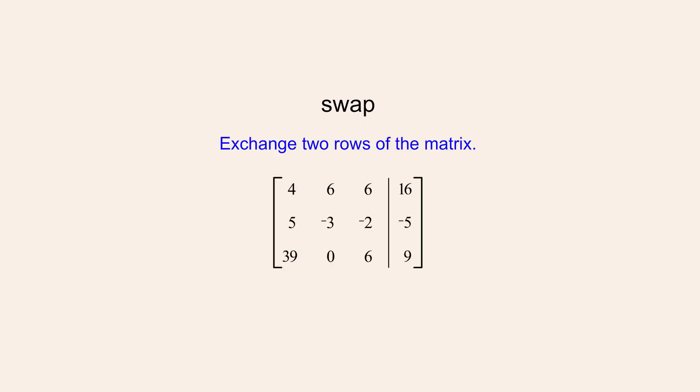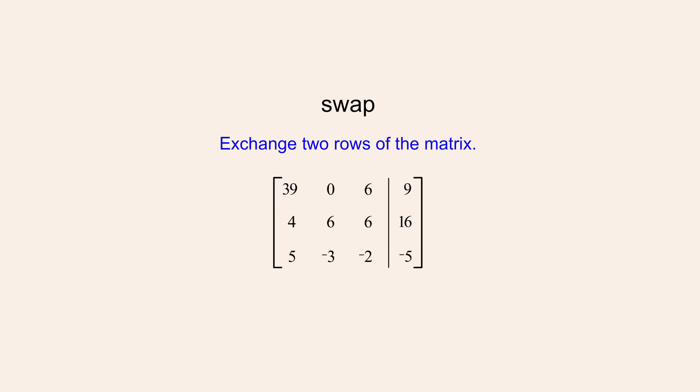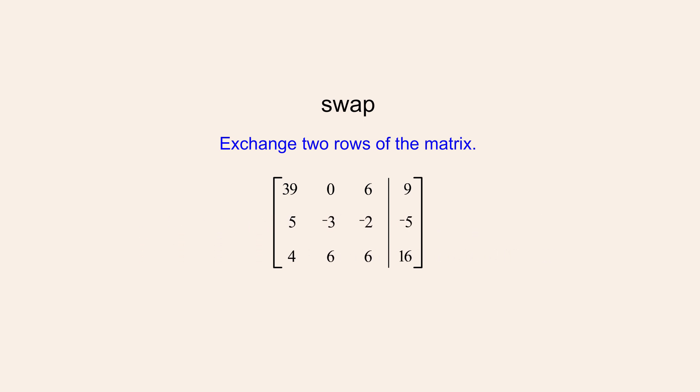The first type of elementary row operation is the swap operation. This operation allows us to exchange any two rows of the augmented matrix. For example, using three swap operations we could exchange rows 1 and 2, then rows 1 and 3, then rows 2 and 3. When using elementary row operations to transform a matrix, it is helpful to have a record of the sequence of operations used so that later we can remember how the transformed matrix was produced.